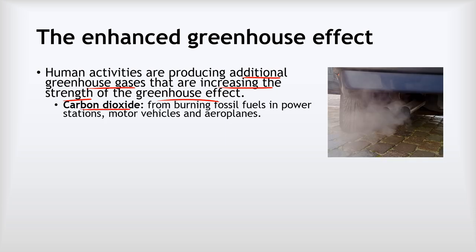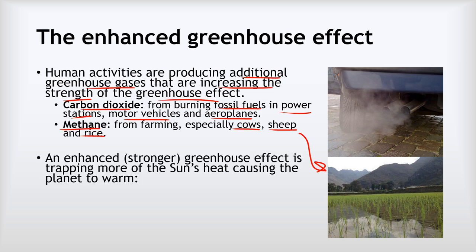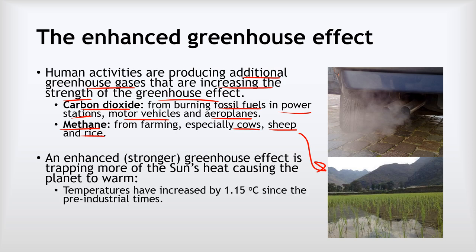The additional gases: the main one is carbon dioxide from burning fossil fuels in power stations, motor vehicles and aeroplanes. The other big one is methane from farming — particularly the farming of cows and sheep, and also rice farming where flooding the field causes methane production as bacteria break down dead plant matter. Temperatures have already increased by about 1.15 degrees celsius since pre-industrial times.